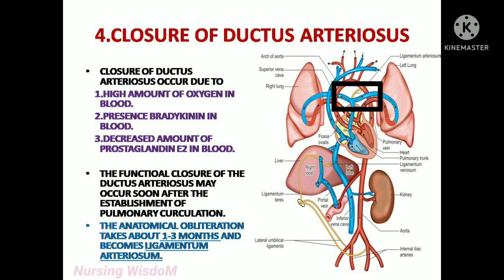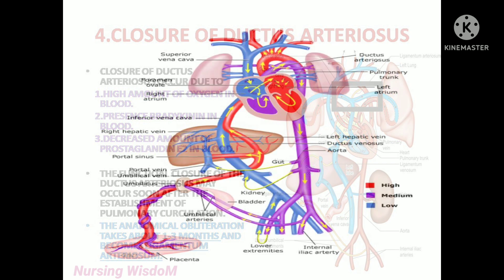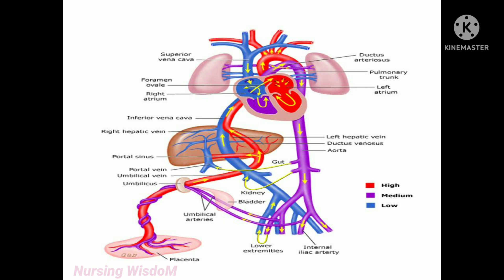The next change is closure of ductus arteriosus. Before birth, the lungs are in a non-functional state and are collapsed, so the pressure in the pulmonary artery will be high. This resists blood going to the lungs, so through the bypass ductus arteriosus — the connection between the pulmonary artery and the descending aorta — the blood will bypass to the aorta.